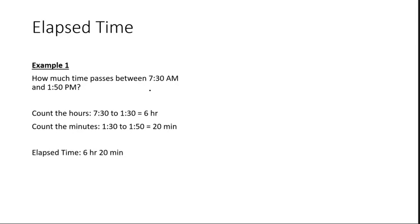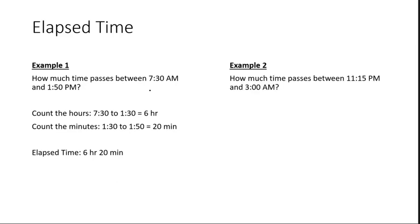That's all there is to it — you just count the hours, and then count the minutes. Let's try another example. Example two: we're trying to figure out how much time passes between 11:15 p.m. and 3:00 a.m.